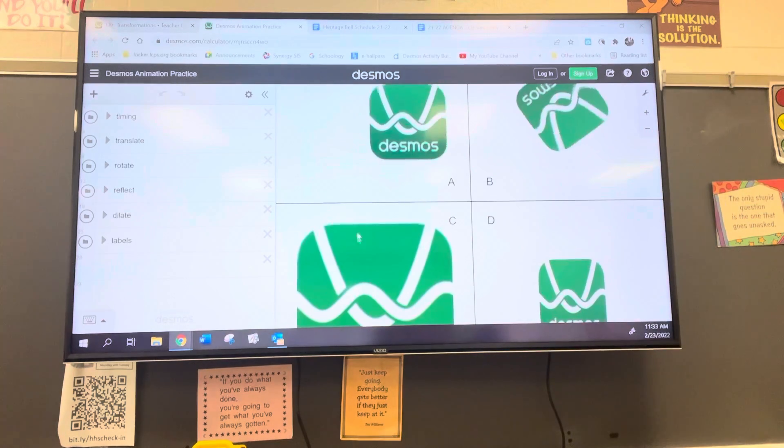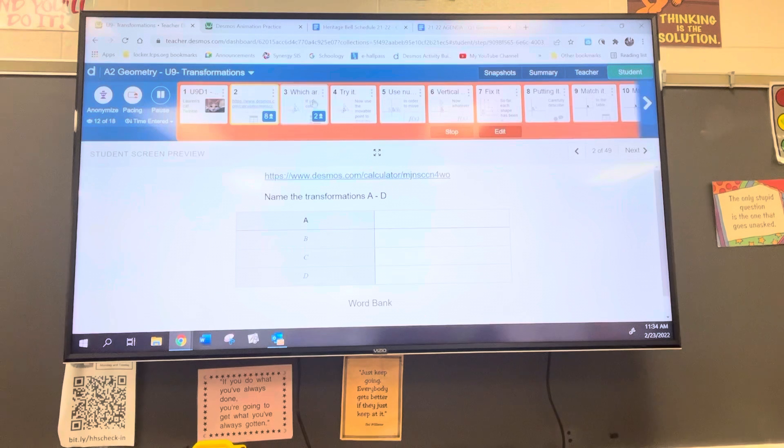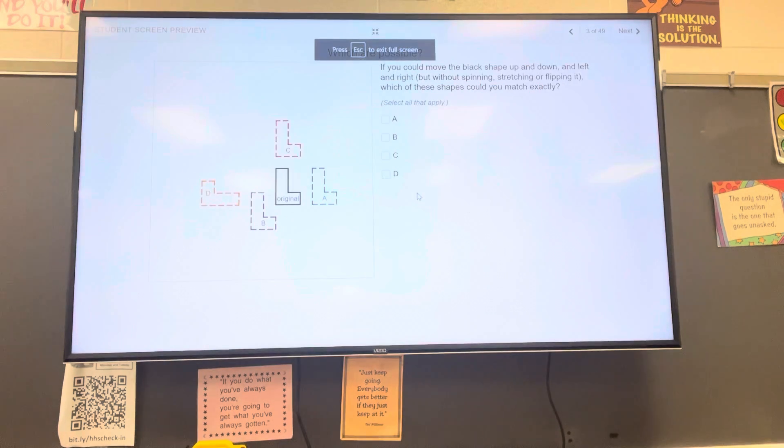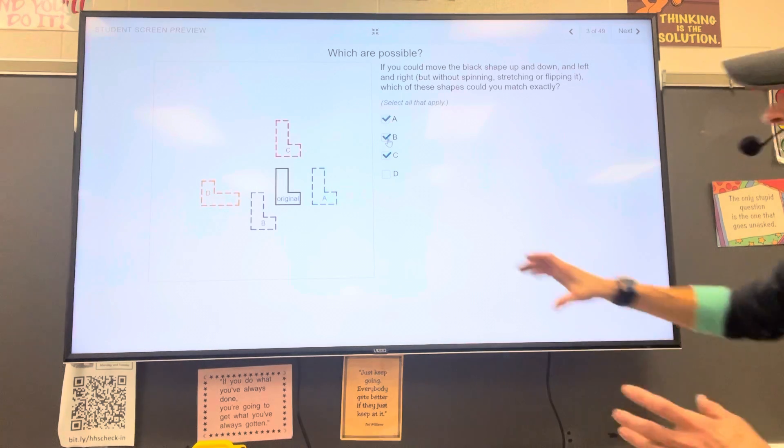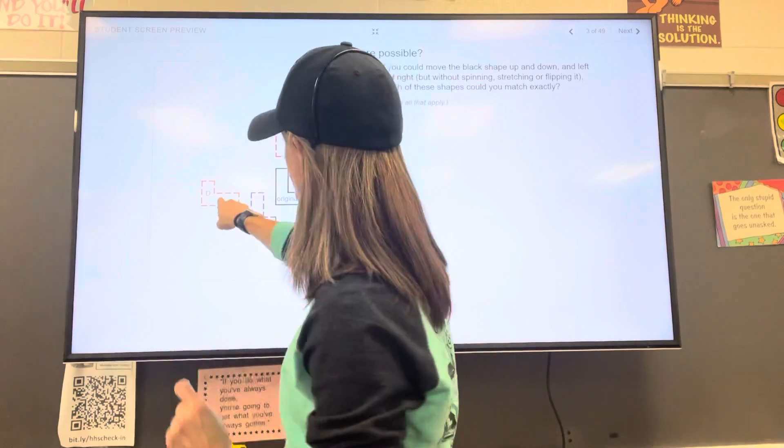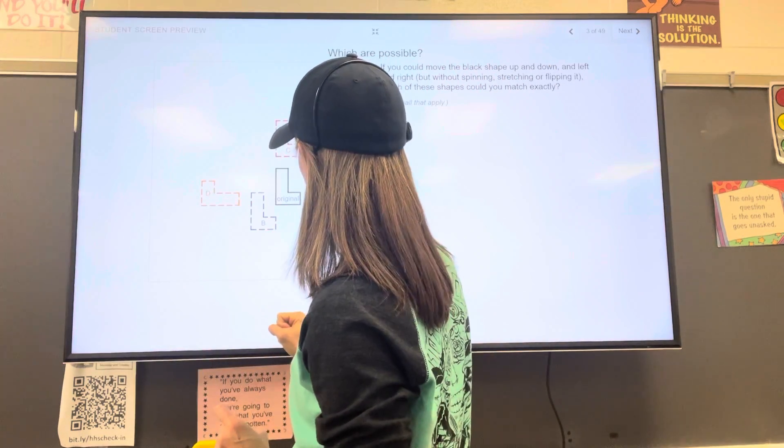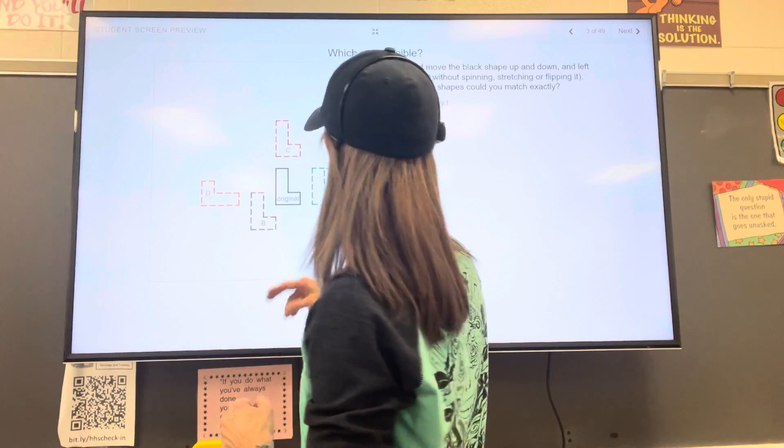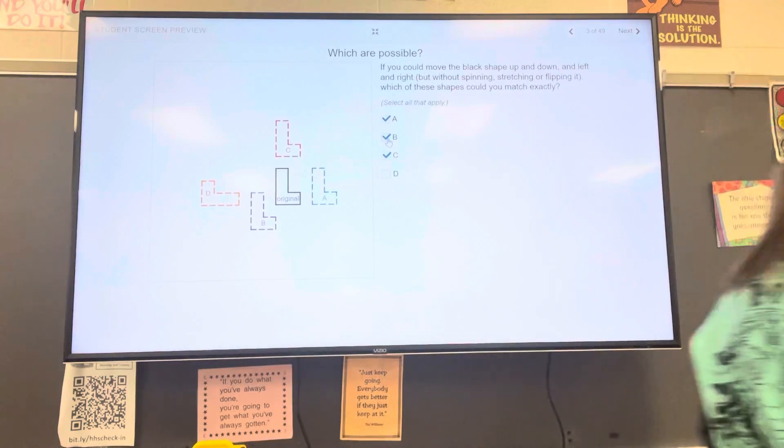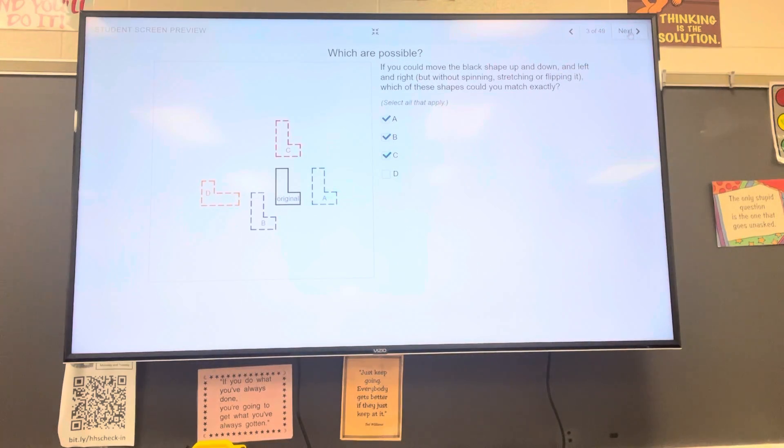Going to the next slide. So you've already tried these. If you could move the black shape up, down, left, or right, which of these shapes could you match exactly? So I can move it up to C, I can move it to the right to A, I could move it to the left to B. But notice D, we would have to take the original shape and rotate it to get it to look like D, and actually flip it as well. So it's just A, B, and C.